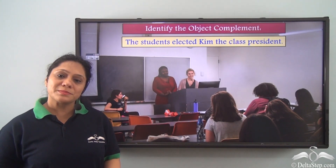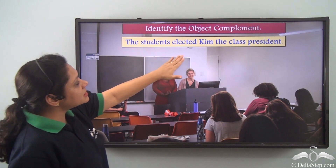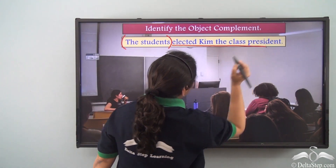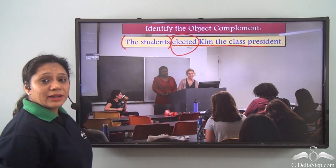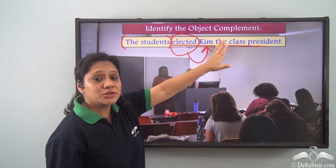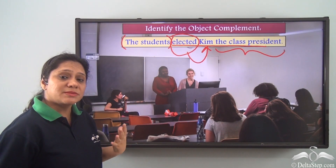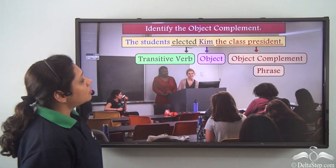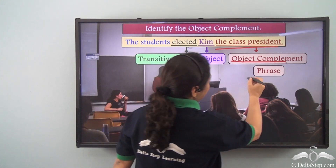Now let us do this exercise — identify the object complement: 'The students elected Kim the class president.' The subject is 'the students,' and 'elected Kim the class president' is the predicate. This predicate has the transitive verb 'elected' which has a direct object 'Kim.' So the students elected Kim what? The class president. So 'the class president' is the complement here, telling us more about the object Kim. Therefore, 'the class president' is the object complement, and since it is a group of words, it is a phrase.